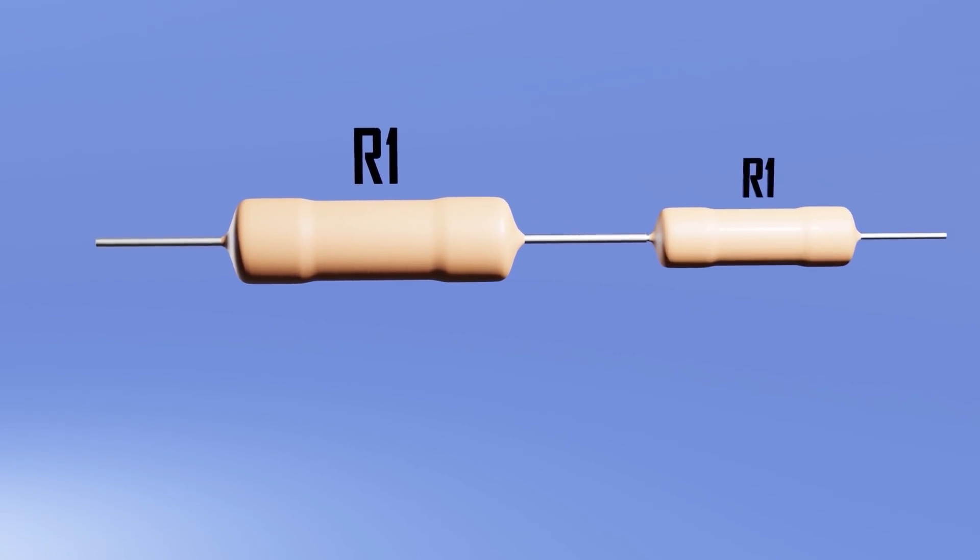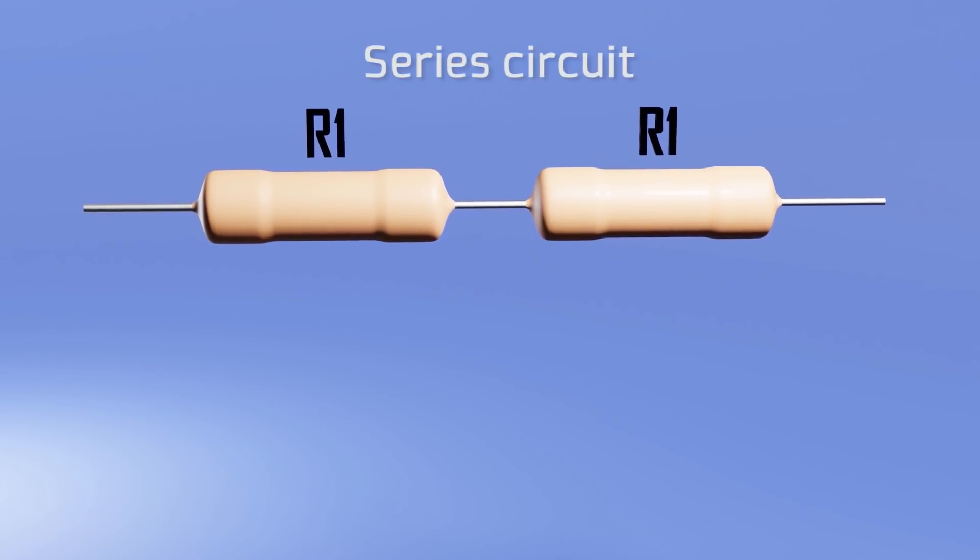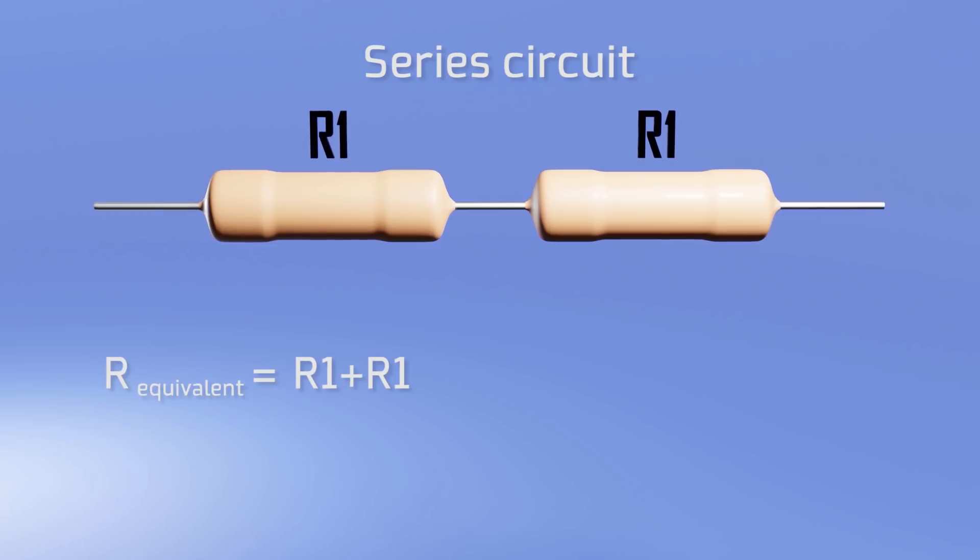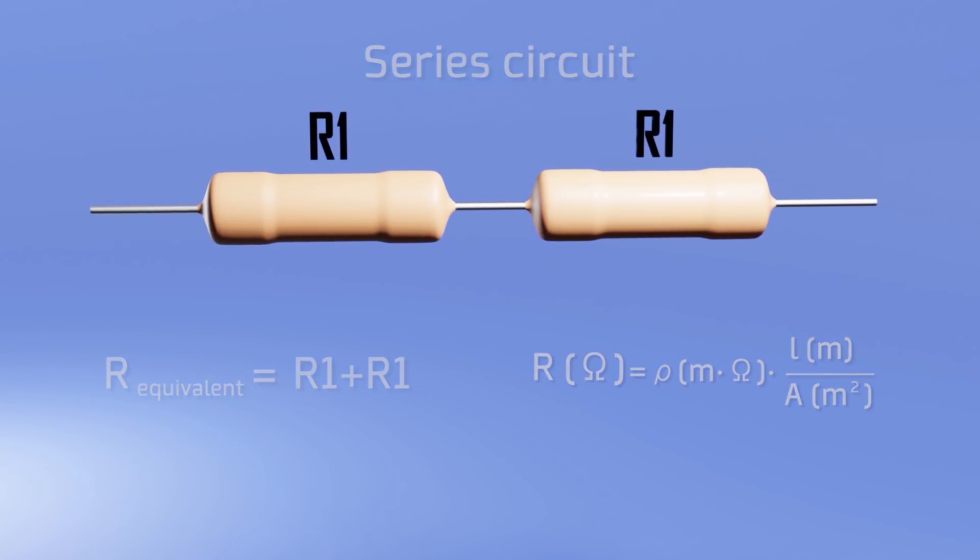The first way is connecting resistors in series, whereby the value of the equivalent resistance is equal to the sum of the connected resistors. This is very easy to remember if we think about the formula that we saw at the beginning. By connecting two equal resistors in series, the only thing we are doing is multiplying the length of the cable by two, and therefore its value will be double.